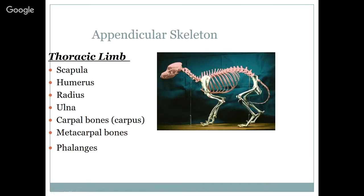The appendicular skeleton includes the thoracic limb: the scapula, the humerus, the radius — which is the thicker bone — the ulna, which has the elbow part on it, the carpal bones which are the wrist, the metacarpal bones which would be like your hand bones, and the phalanges which would be like your fingers.